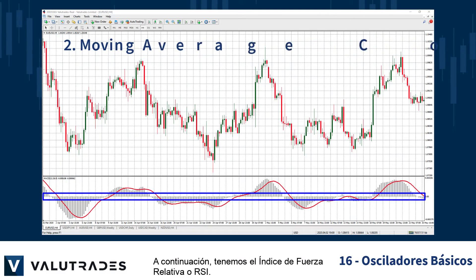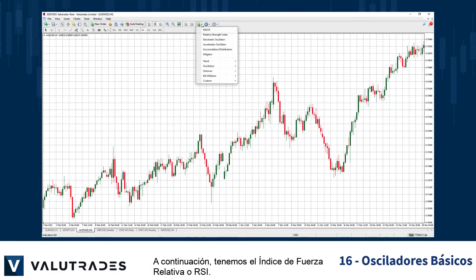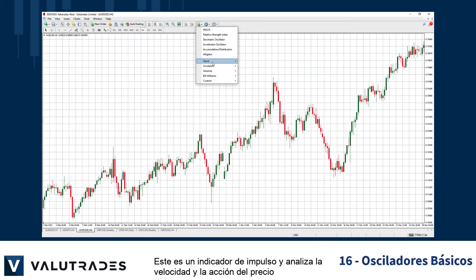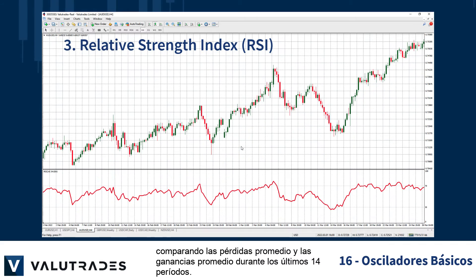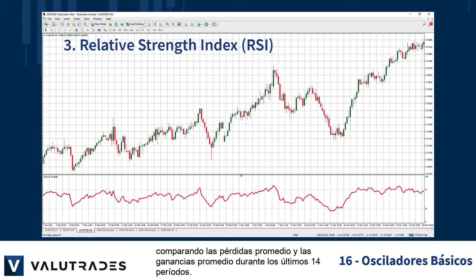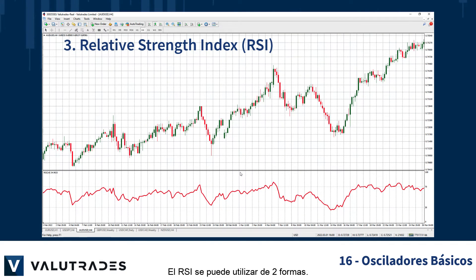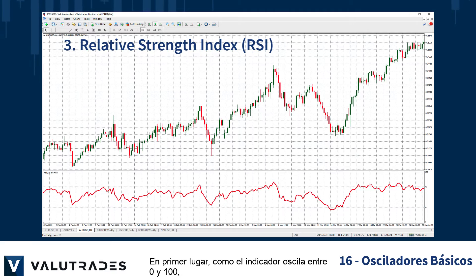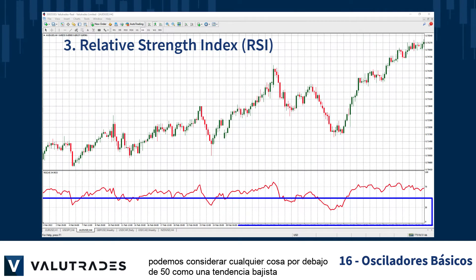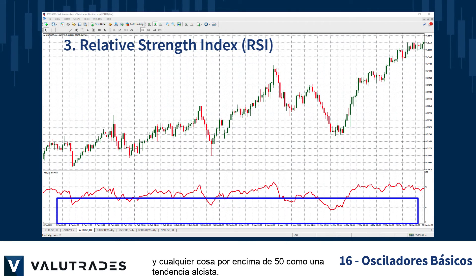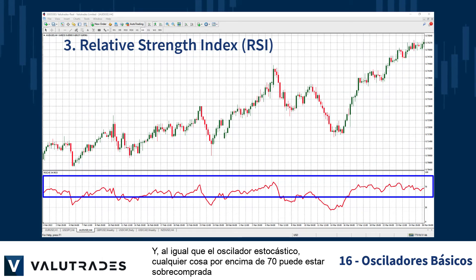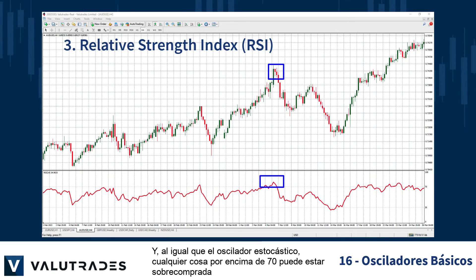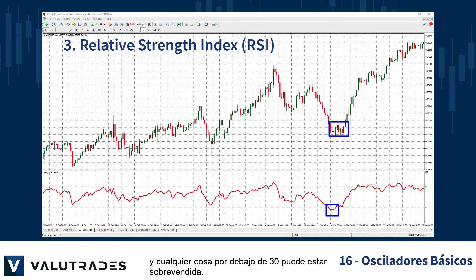Next, we have the Relative Strength Index or RSI. This is a momentum indicator and looks at the speed and price action comparing average losses to the average gains over the last 14 periods. The RSI can be used in two ways. Firstly, as the indicator oscillates between 0 and 100, we can consider anything below 50 a downtrend and anything above 50 an uptrend. And, similar to the Stochastic Oscillator, anything above 70 may be overbought and anything below 30 may be oversold.